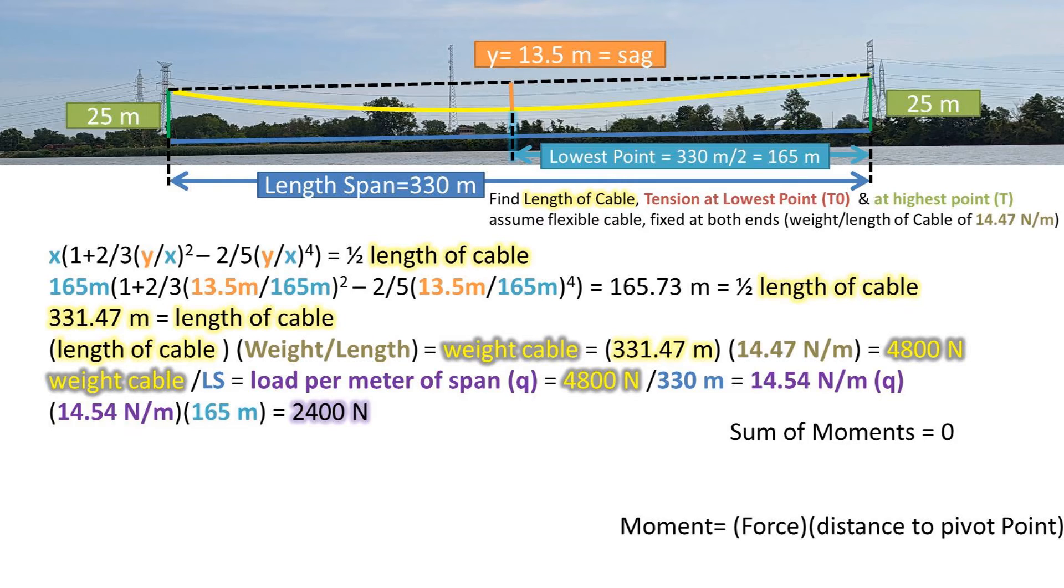This is a statics problem, so all the sum of the moments are equal to zero. A moment is a force that is making the object want to pivot times the perpendicular distance to that pivot point. So let's draw out the forces. We have a tension force at the lowest point that is acting at 13.5 meters lower than the max height fixed point, which is the pivot point. This force is making the cable want to pivot this way.